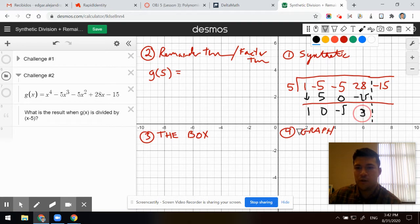That's a 3. Multiply, combine. Remainder 0. Magic.